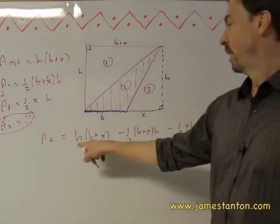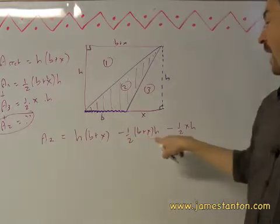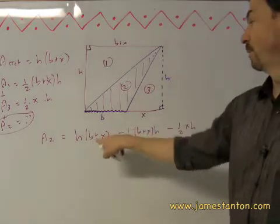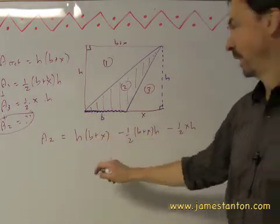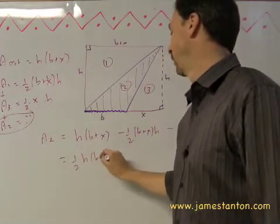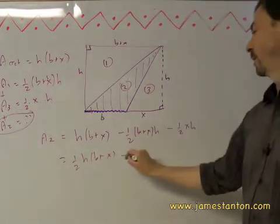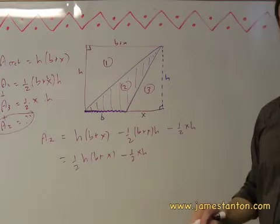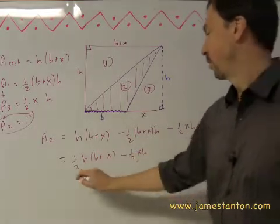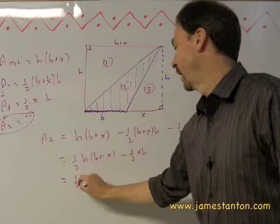Well obviously I'm going to do a little bit of algebra on this. For example, h times b plus x, minus half of h times b plus x, something minus half of itself is obviously just half of it. So this is one half h times b plus x, and still minus the one half xh on the end. Maybe I'll expand this, because I don't know what else to do. One half h times b.